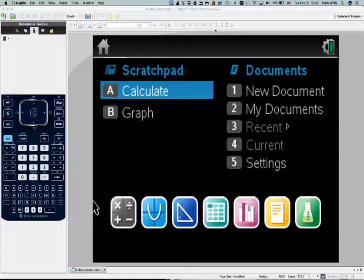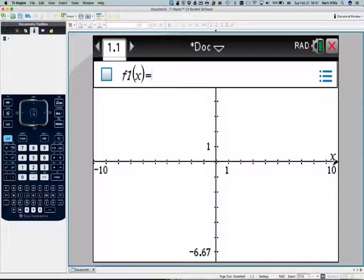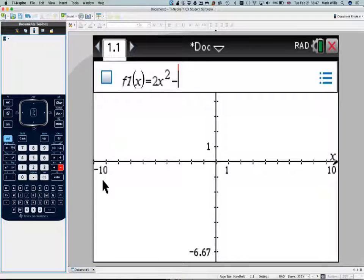So we're going to go to our GDC, go to a graphing mode, and put in our quadratic, which is 2x² - 5x - 3.